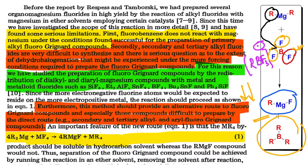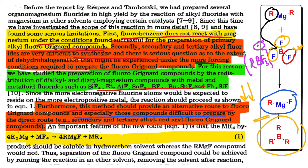So we have understood the mechanism. Now just to note: fluorobenzene does not react with magnesium under these conditions. Successful preparation applies to primary alkyl fluorogrignard compounds; tertiary and secondary alkyl fluorides are difficult to synthesize — as we discussed. In this way, we have an alternate route to prepare this fluorogrignard compound, especially those compounds that are difficult via the direct route.